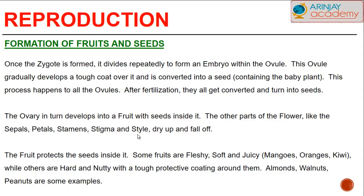Other parts of the flower like the sepals, petals, stamens, stigma, and style all dry up and fall off. The fruit protects the seeds inside it. Some fruits are fleshy, soft, and juicy like mangoes, oranges, and kiwi, while others are hard and nutty and have a tough protective coating around them, like almonds, walnuts, and peanuts. These are just some examples.